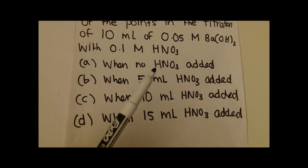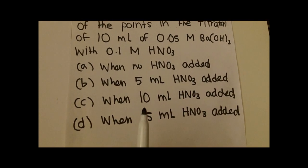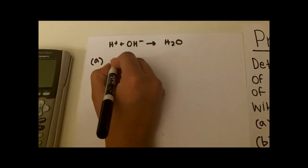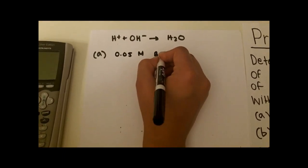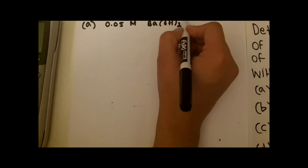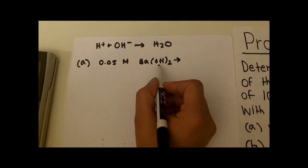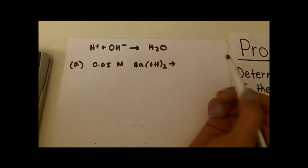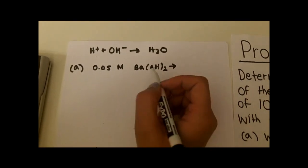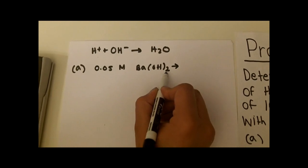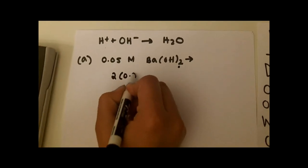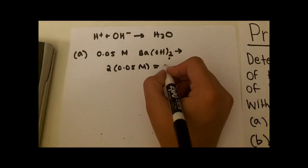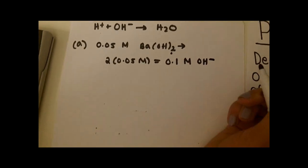The first question says find the pH when no nitric acid is added. All you have to do is look at the initial molarity of the barium hydroxide base. We have 0.05 molar barium hydroxide. A common mistake is writing 0.05 molar hydroxide, but we have to note that there are two hydroxide ions. So it's going to be 2 times 0.05, giving us 0.1 molar of OH⁻ initially.